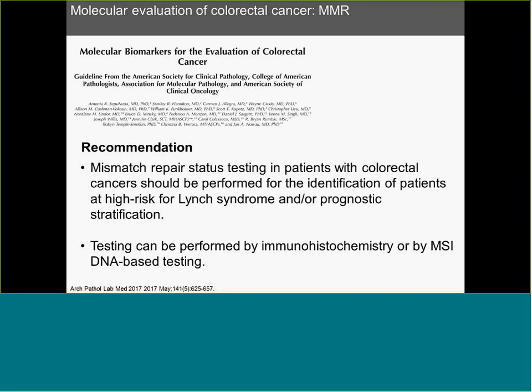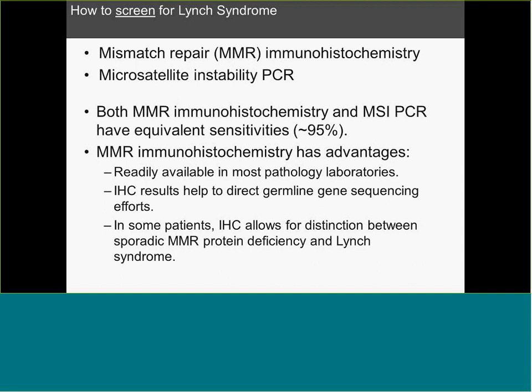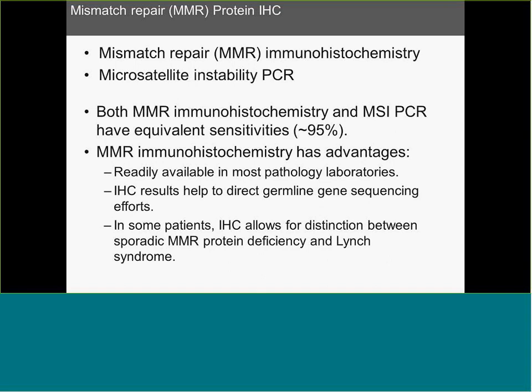The guidelines recommend that MMR testing in patients with colorectal cancer should be performed for identification of patients at high risk for Lynch syndrome and/or prognostic stratification. Testing can be performed by IHC or by MSI DNA-based testing. Both have equivalent sensitivities of around 95%, but MMR immunohistochemistry has advantages: it is readily available in pathology laboratories; IHC can help direct germline gene sequencing; and in some patients IHC allows distinction between sporadic MMR protein deficiencies and Lynch syndrome.